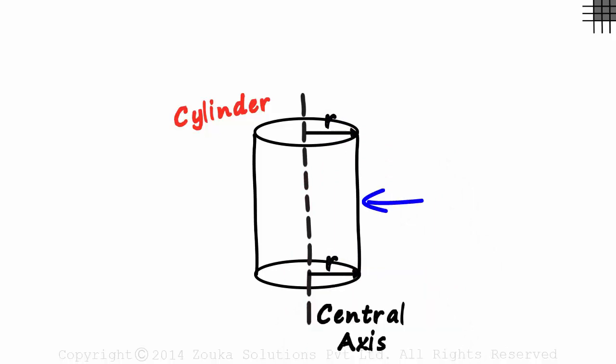In a right circular cylinder, the distance between the two centers of the circles is its height. Let's call it h.